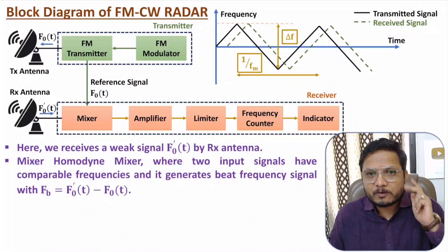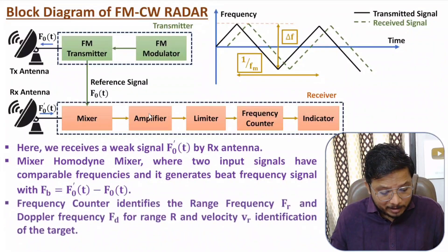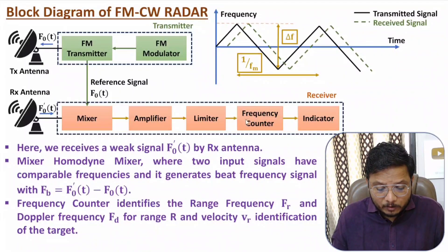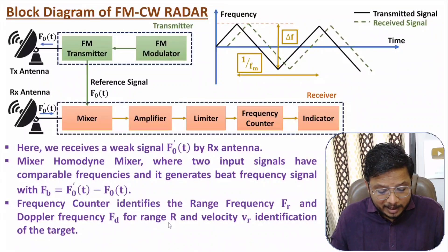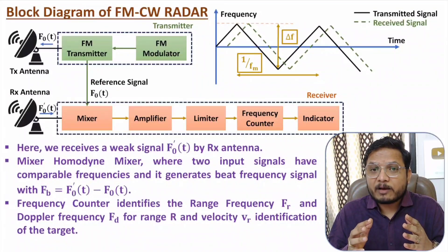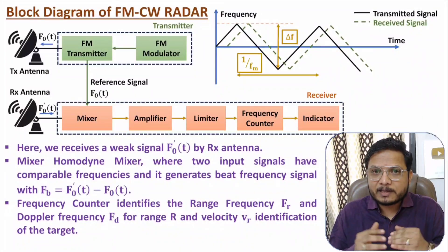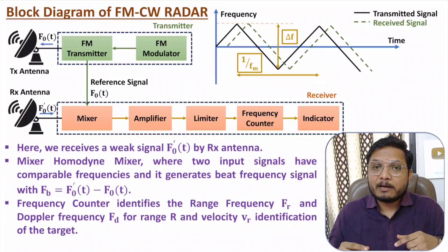That beat frequency is given to an amplifier and then a limiter. After that, the beat frequency is given to a frequency counter, which separates the range frequency and Doppler frequency. Based on that, we can identify range and velocity. Now I will explain the calculation of range frequency and Doppler frequency, by which you can easily understand how to identify range and motion of the target.